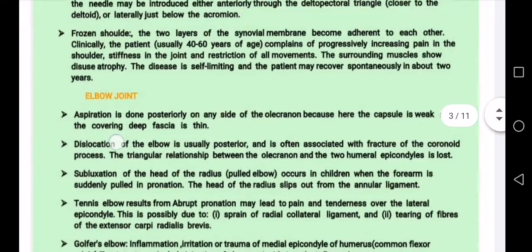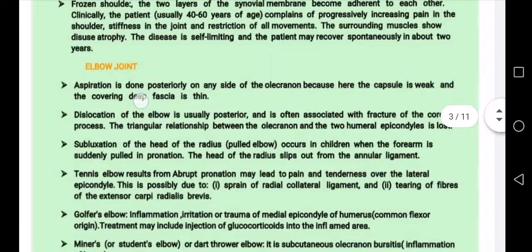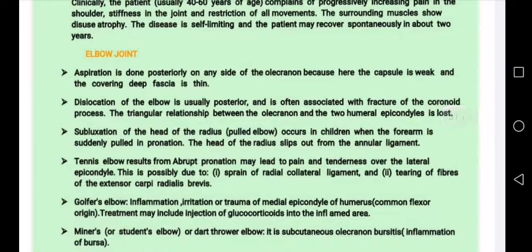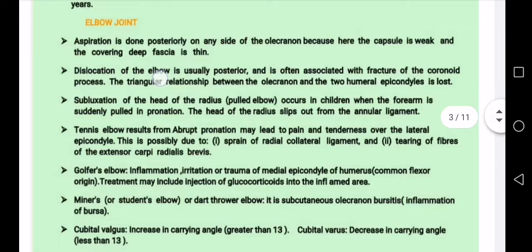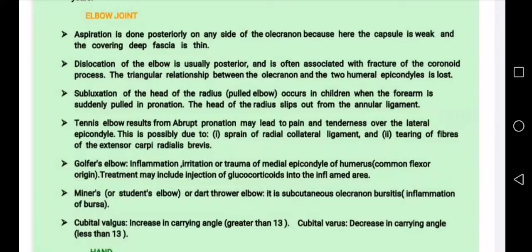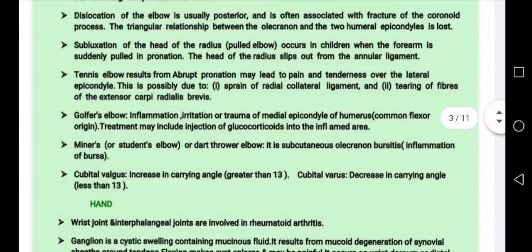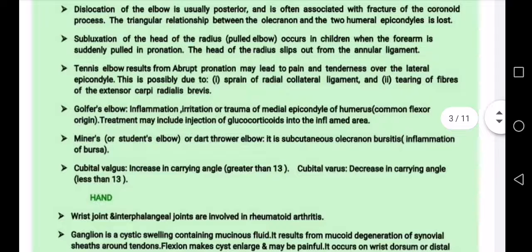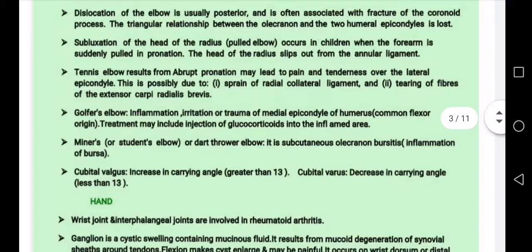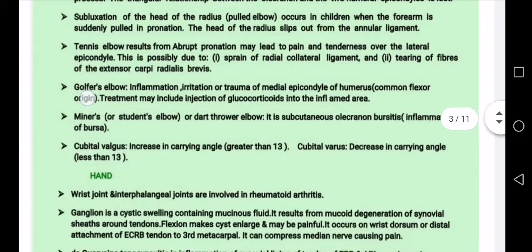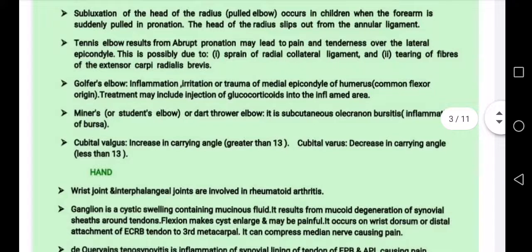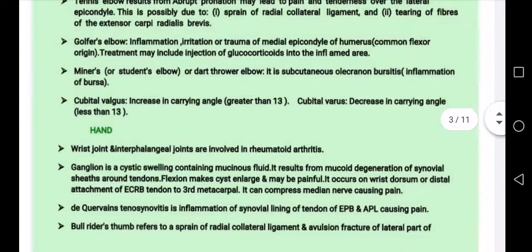The elbow joint has two layers of synovial membrane. Elbow joint aspiration is done posteriorly on either side of the olecranon. Dislocation of the elbow is usually posterior, with fracture of the coronoid process. Subluxation of the head of the radius also occurs. Tennis elbow involves tenderness on the lateral side; golfer's elbow involves the medial side.